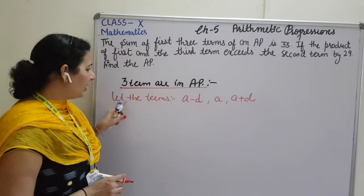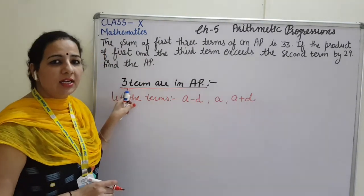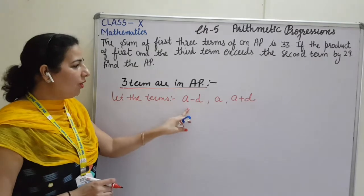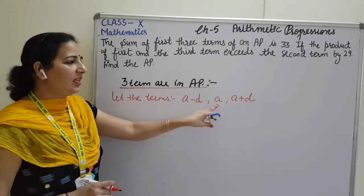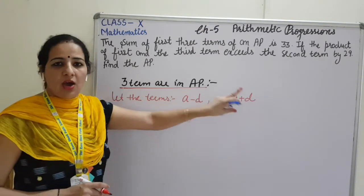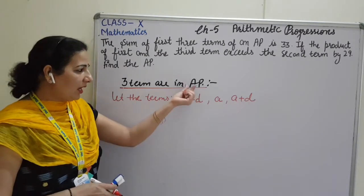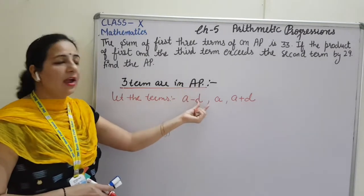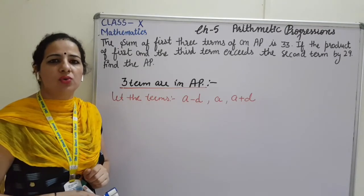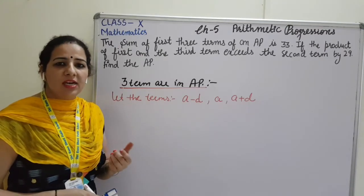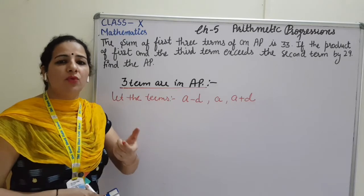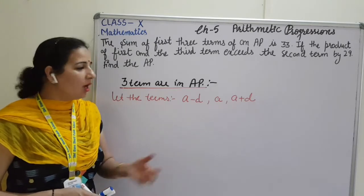So whenever the question will be related by the 3 terms of AP, you always let A minus D, A and A plus D. Why I have chosen these numbers only? Because for making the terms are in AP, we have to focus on the common difference also. We can't choose the terms like X, Y, Z, because we have to maintain the common difference.